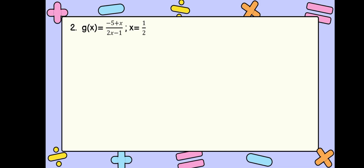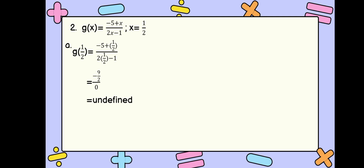Number 2: we are to check if our function negative 5 plus x over 2x minus 1 is continuous at x equals 1 half. We are going to use the 3 conditions. Let us first evaluate our function. g of 1 half is equal to negative 5 plus 1 half over 2 times 1 half minus 1. Negative 5 plus 1 half is negative 9 over 2. 2 times 1 half is 1, minus 1 is 0. So negative 9 over 2 all over 0 is undefined. Our function does not have a value, and we can conclude that it is discontinuous at x equals 1 half.